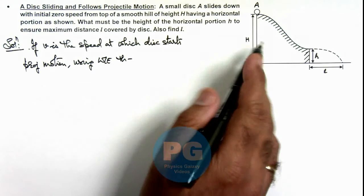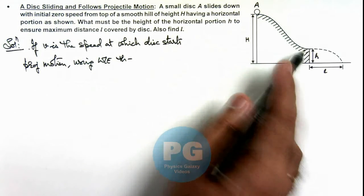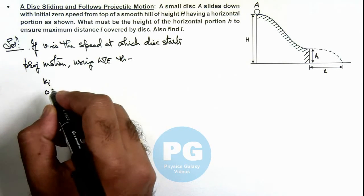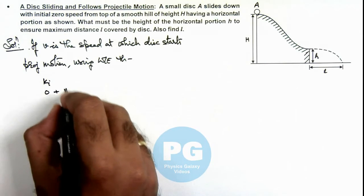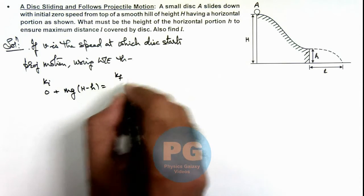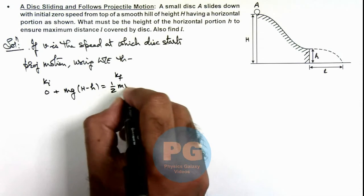The distance fallen by the disc from here to here will be H minus h. So initial kinetic energy of disc was zero plus mgh minus small h is equal to the final kinetic energy of disc which is half m v squared.